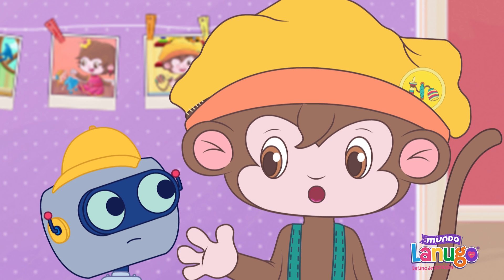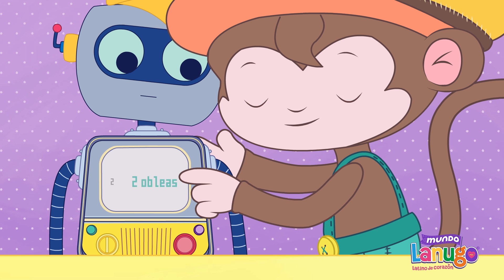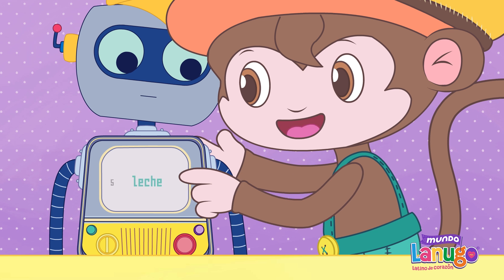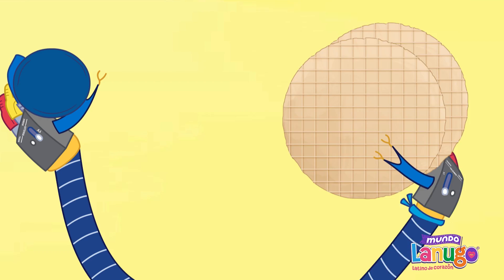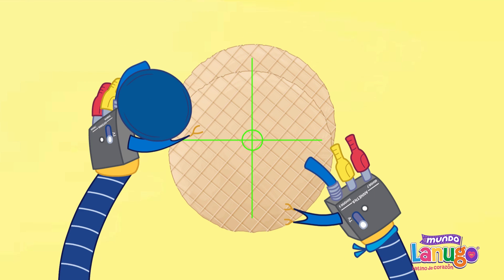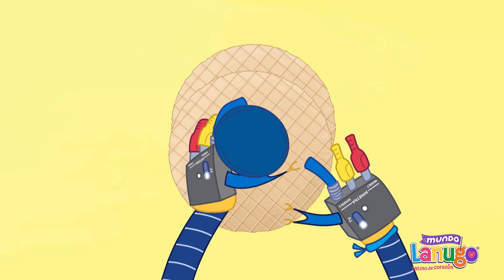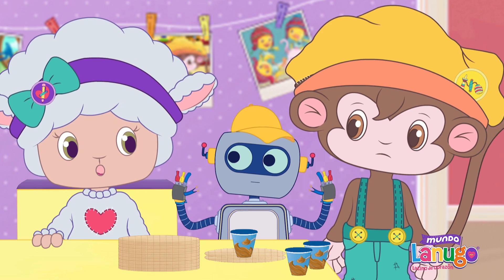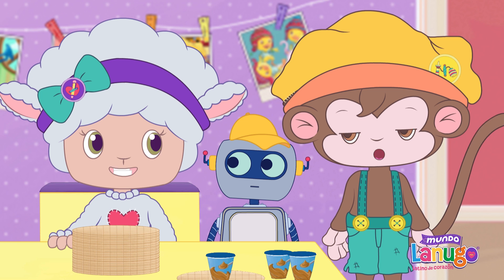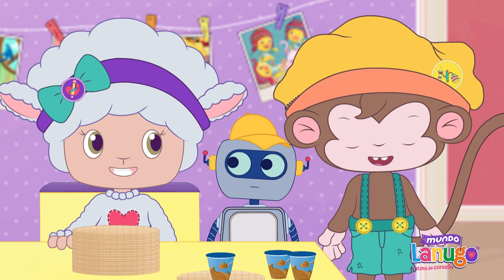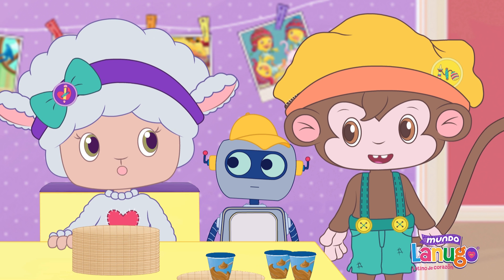Robuki, take two obleras and put dulce de leche in the middle. Wait, what? They have to be specific. I think you have to go step by step, including opening the cup of dulce de leche.